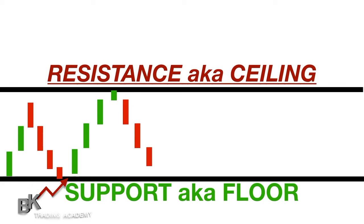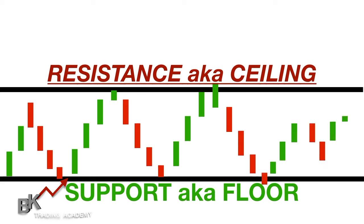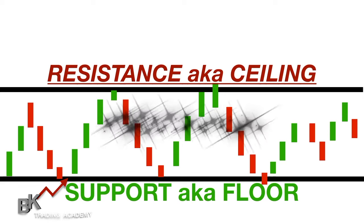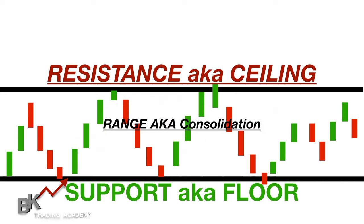You have to actually draw support and resistance on your chart and use your eye to determine where it is. As price moves up and down between the floor and ceiling — even if the last candle slightly pokes outside — it's still within that support-and-resistance rectangle. This bouncing between floor and ceiling is also known as a range or consolidation.